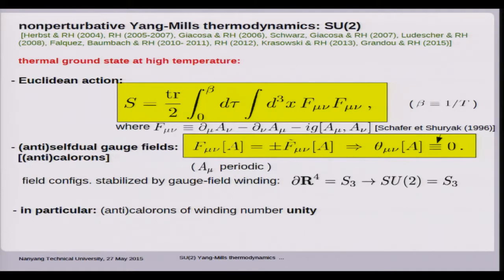Self-duality obviously implies the configuration is a solution to the Euler-Lagrange equations of the theory. At finite temperature, we have to insist that the gauge field is periodic in time. Topological field configurations, in the sense of self-dual configurations, are stabilized by non-trivial homotopy. Non-trivial π3 of SU2 stabilizes these configurations. We are particularly interested in calorons, self-dual configurations at finite temperatures obeying periodicity constraints at winding number unity.